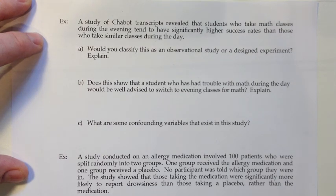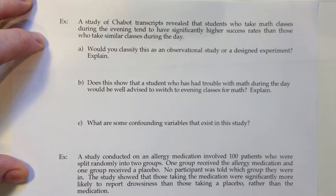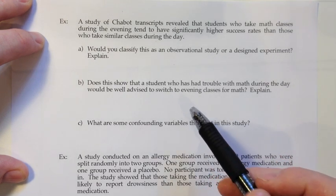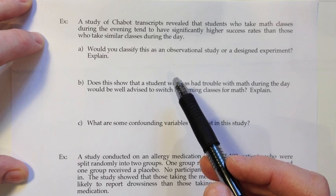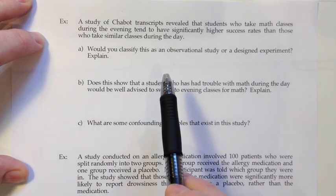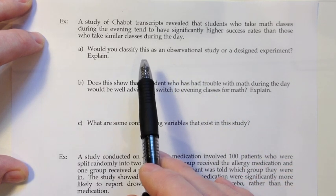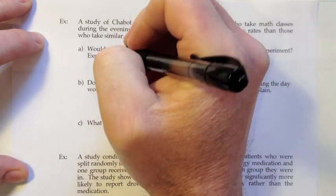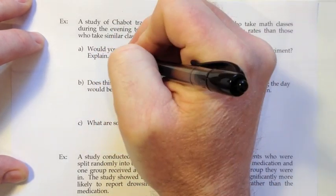A study of Chabot transcripts revealed that students who take math classes during the evening tend to have significantly higher success rates than those who take similar classes during the day. Would you classify this as an observational study or designed experiment? The key is to look at who is making the choice in the treatment — whether the student takes a class during the day or evening. At most colleges including Chabot, the student makes that choice, so this is an observational study.